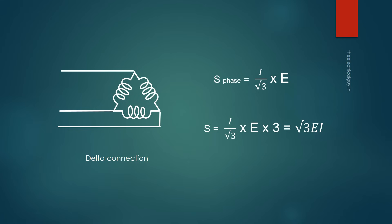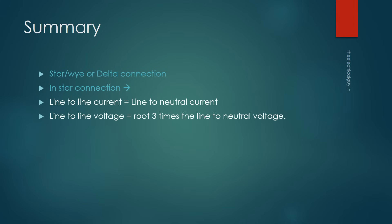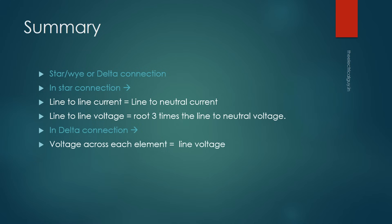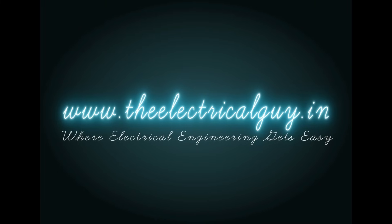To summarize: a three-phase system can be connected in star or delta. In star connection, line current equals line-to-neutral current, but line-to-line voltage is root 3 times the line-to-neutral voltage. In delta connection, voltage across each element equals the line voltage, but line current is root 3 times the current through each element. Power transmitted by both connections is the same. That's all for this video — see you in the next one.